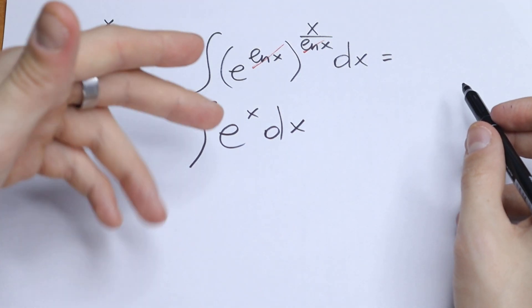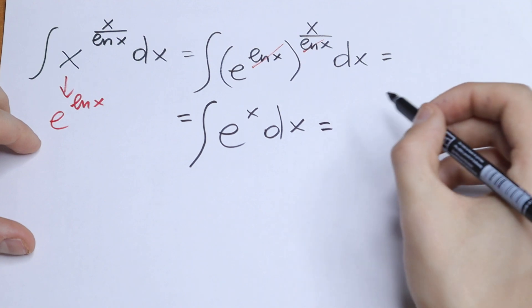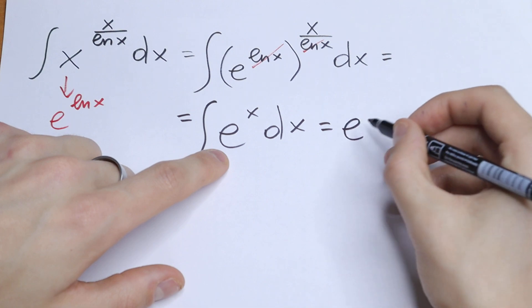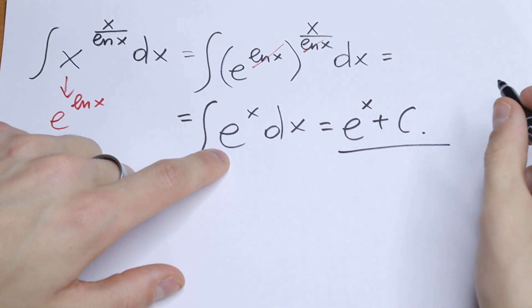This is a classic integral, this is a table case, so we all know that this integral will be equal to, if we integrate e to the power x, we will have e to the power x plus c. And this is our answer.